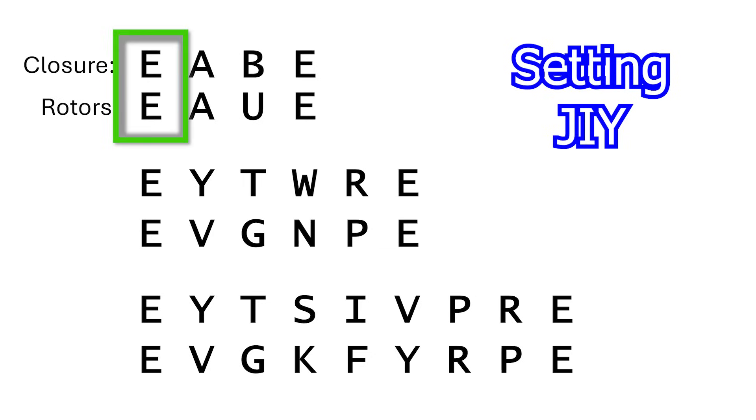We see all the closure loops starting and ending with E, so that's correct. E maps to E, A maps to A, B maps to U, Y maps to V, T maps to G, W maps to N, and R maps to P.